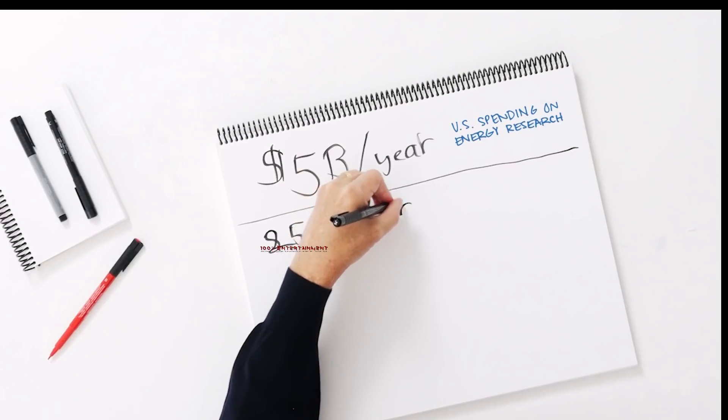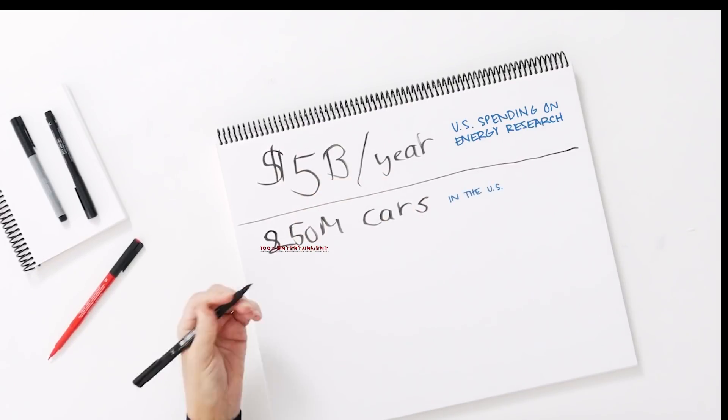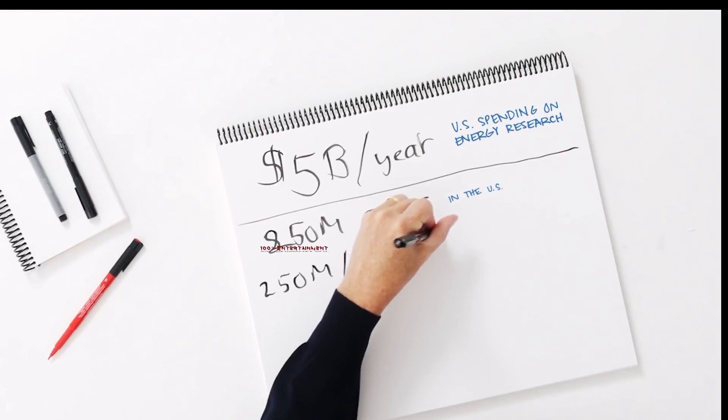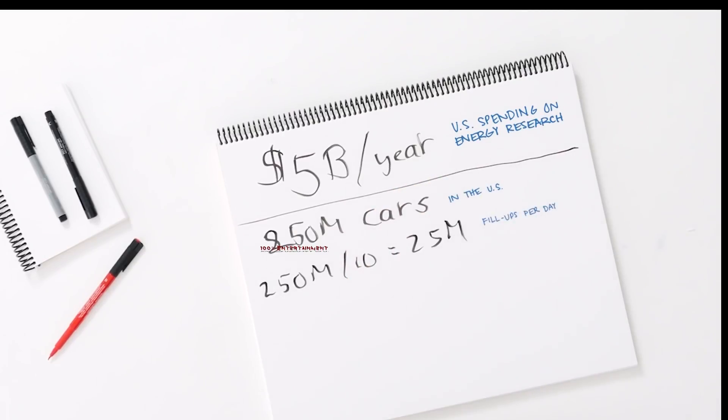We take the number of cars on the road, 250 million cars. You probably fill up every 10 days or so. We've got 25 million fill-ups per day.